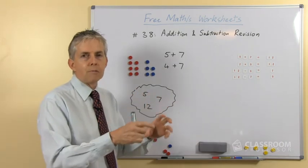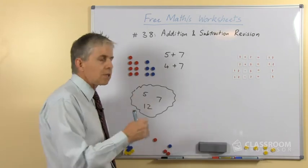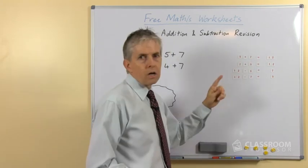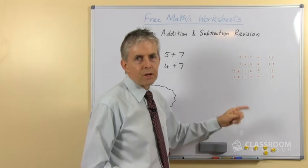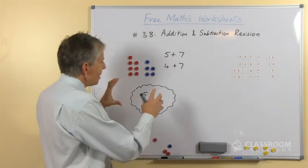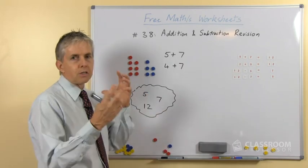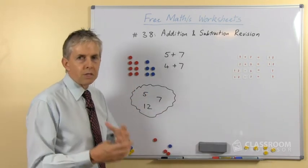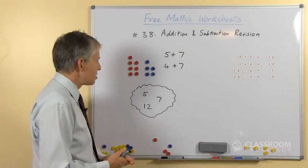I think moving the tiles with numerals on them would reinforce the idea that all four of these number facts only use three numbers — the 5, the 7, and the 12. So if students can learn that set of numbers effectively as an associated group for addition and subtraction, they've instantly got four number facts they can use.